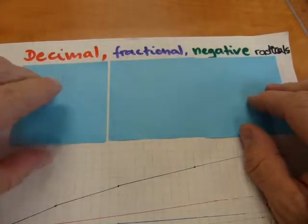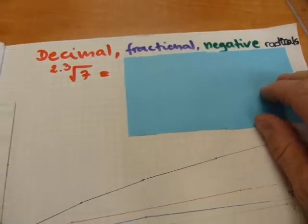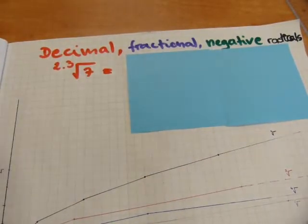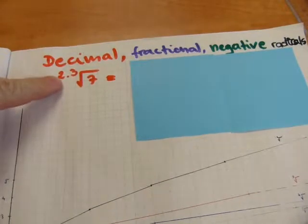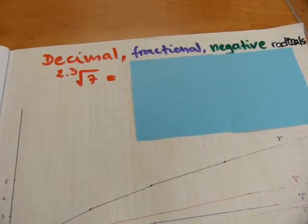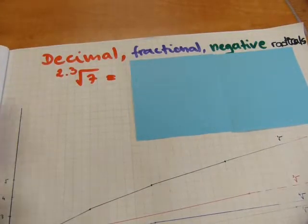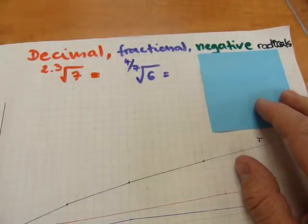Let me explain here how these look like. By decimal radicals, we mean this, that the index number is a decimal number.